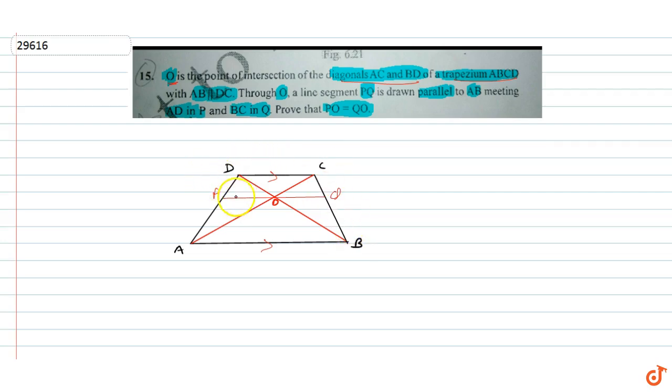Prove that PO equals OQ. So given AB is parallel to DC and PQ is parallel to AB, that means AB is parallel to DC is parallel to PQ.